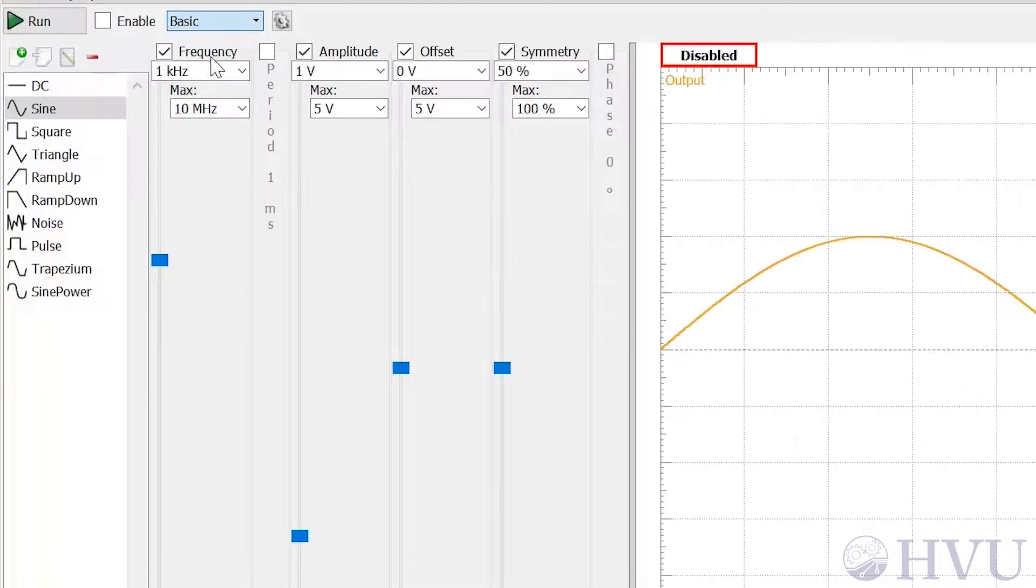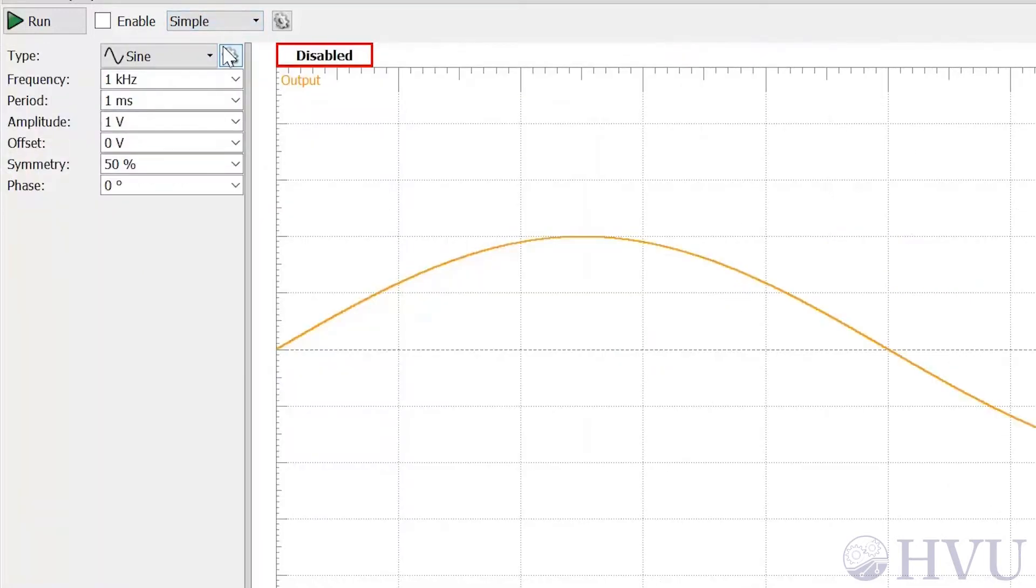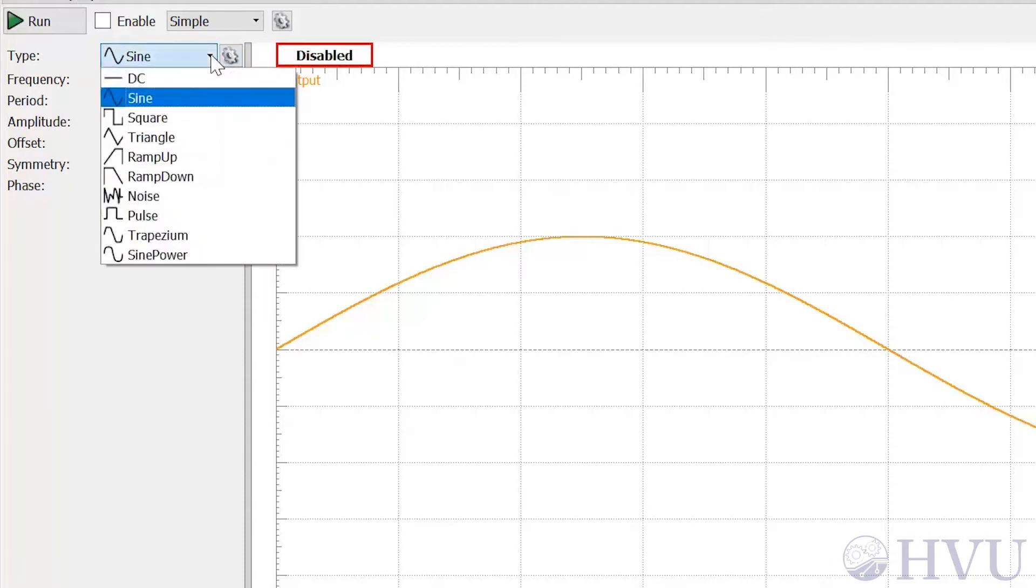The simple and basic options are very similar. They both allow you to choose from a set of predefined functions such as square waves, sine waves, triangle waves, and so on. You can also apply constant or DC voltages using the waveform generator.